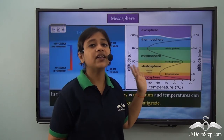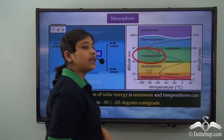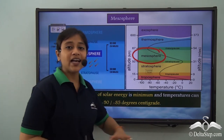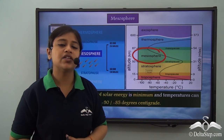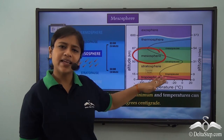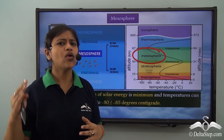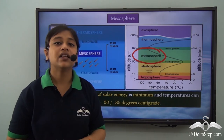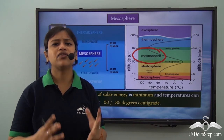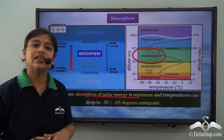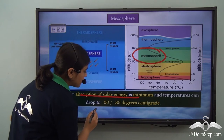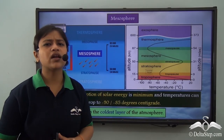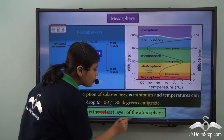The mesosphere lies in between the atmospheric layers, hence it is known as the middle layer. In the troposphere, temperature falls as we go higher. In the stratosphere, it gets hotter as we go higher. In the mesosphere, the temperature starts falling rapidly due to minimum absorption of solar energy. Temperatures can fall down to minus 85 to minus 90 degrees centigrade, making it the coldest layer of the atmosphere.